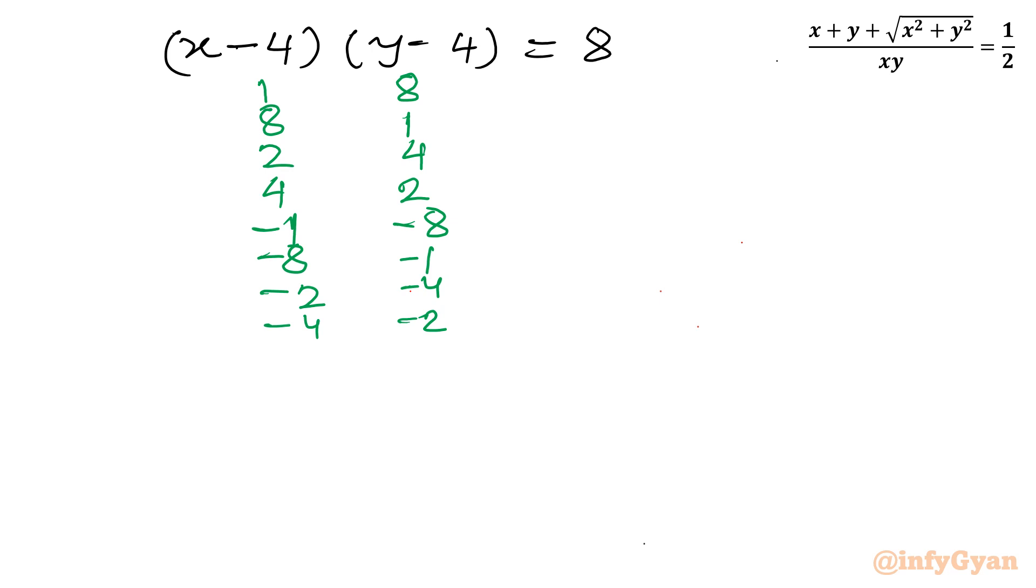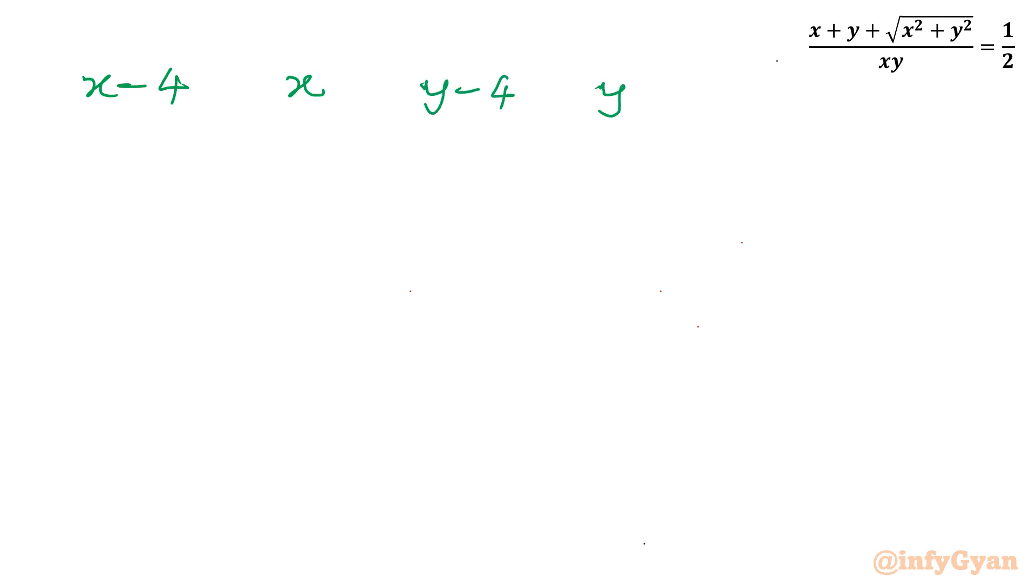These are factors for x minus 4 and y minus 4. So now I will create one chart. x minus 4, then here I will be writing x. y minus 4, then here I will be writing y. And then I will write our ordered pairs. So let me write here the set value first. I will begin with 1 and 8, 8 and 1, 2 and 4, 4 and 2.